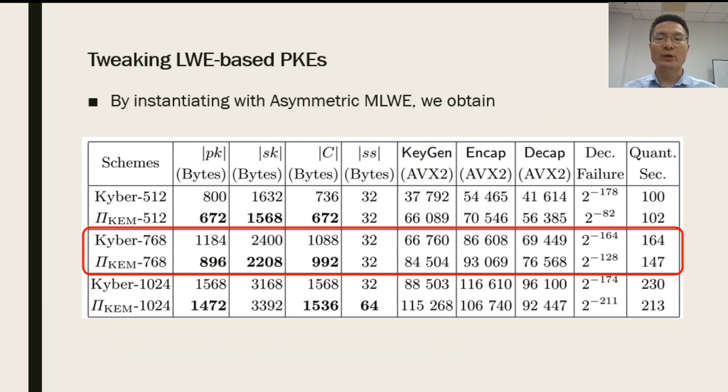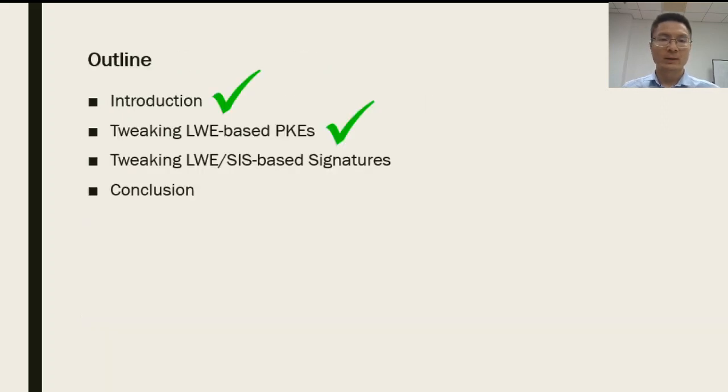By instantiating the above scheme with the asymmetric variant of modular LWE, we obtain shorter public key and ciphertexts. For example, for the targeted 108-bit security, both the public key and ciphertext are less than 1000 bytes and are smaller than NIST Round-2 submission Kyber. Now, let's move into the third part.